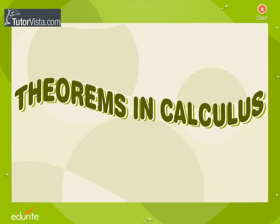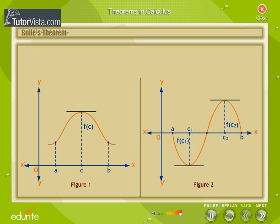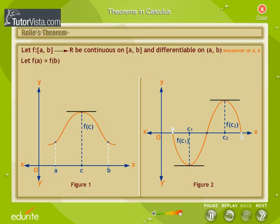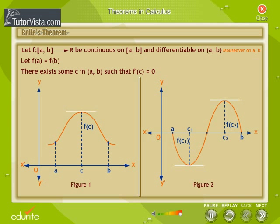Theorems in Calculus. Rolle's Theorem: Let f be a function from A to B. If f is continuous on [A, B] and differentiable on (A, B), and if f(A) equals f(B), where A and B are some real numbers, then there exists some c in (A, B) such that f'(c) is equal to zero.